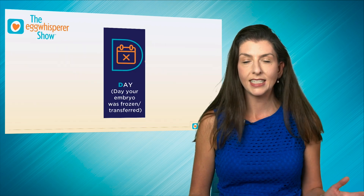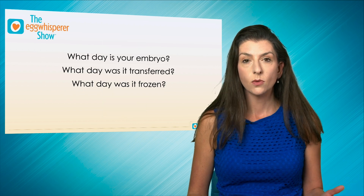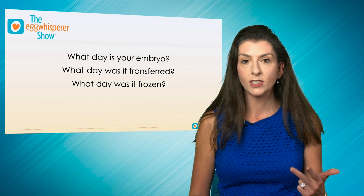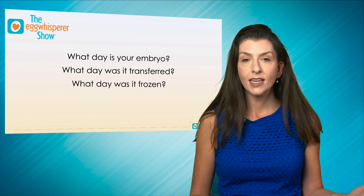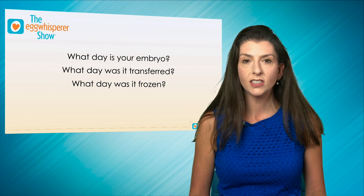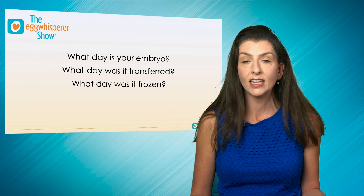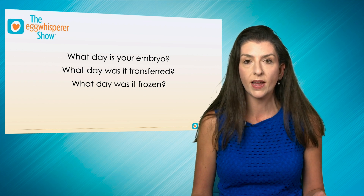The first letter is D — Day. What day is your embryo? Is it a day two, a day three, a day five? Was it transferred as a day three, or frozen as a day five or day six? This is very important information because it will guide you on the pregnancy chance per embryo, and that's really important for knowing whether your embryos will help you reach your goals.